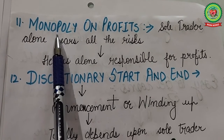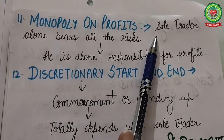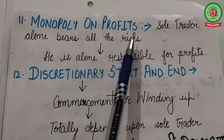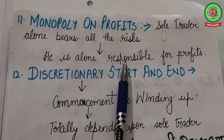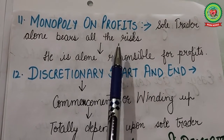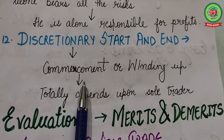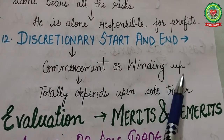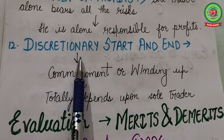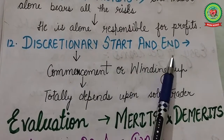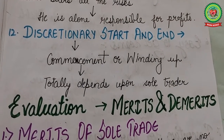Next is monopoly on profits — in sole tradership, the sole trader bears all the risks of the business, so he alone is responsible for the profits and losses. Next is discretionary start and end — in sole trade, the commencement or winding up totally depends upon the sole trader's discretion. He has the power to start and end his own business. This concludes the characteristics of sole proprietorship.